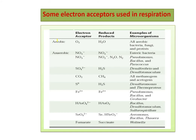In case of aerobic respiration, the electron acceptor is oxygen, and the reduced products are water. The microorganisms involved are all aerobic — basically fungi, bacteria, and protists. In case of anaerobic respiration, the electron acceptors are nitrate, sulfate, carbon dioxide, elemental sulfur and iron, selenium oxide, and fumarate. The reduced products are H2S, methane, cuprous, arsenic, and succinate. This is the list of details of all microorganisms involved under aerobic as well as anaerobic respiration.